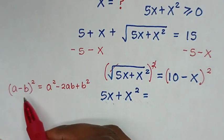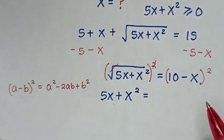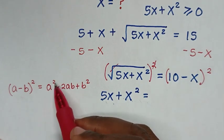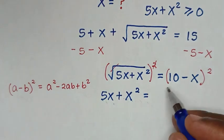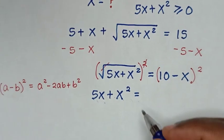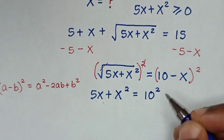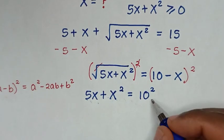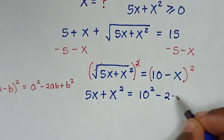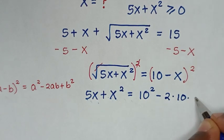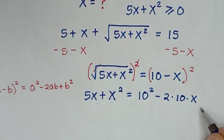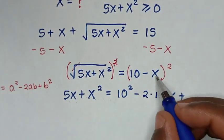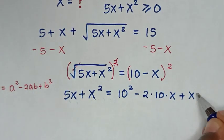Comparing: a is equal to 10 and b is equal to x. Applying this form: a squared gives 10 squared, minus 2ab gives minus 2 times 10 times x, then plus b squared gives plus x squared.